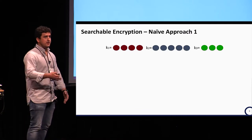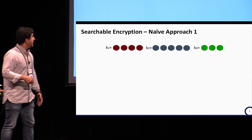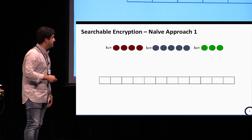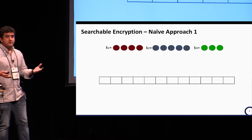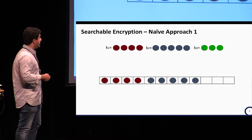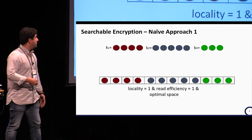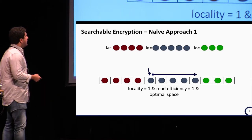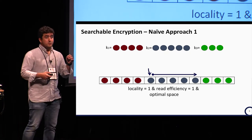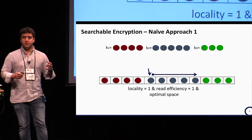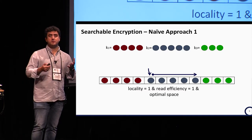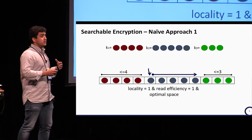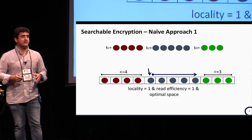Let's build intuition behind searchable encryption schemes with good locality. Suppose we have three keyword lists of sizes 4, 5, and 3. Why not store them in a way that allows retrieval with optimal locality, optimal read efficiency, and linear space? The reason is: if we access the blue keyword, we don't just learn information about the blue keyword — we learn information about the input dataset and future queries. Since there is not enough space left and right, the server now knows we will never have a future query with result size 5 or more.